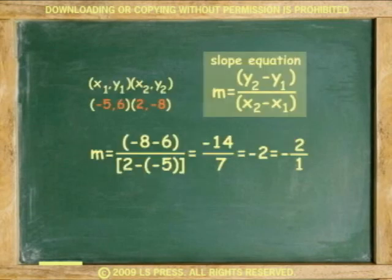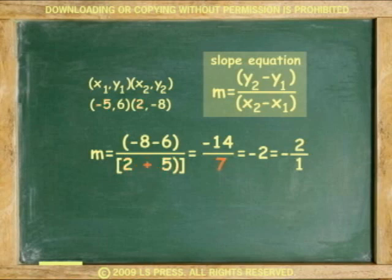Another example. Find the slope of the line passing through points (negative 5, 6) and (2, negative 8). M equals negative 8 minus 6 equals negative 14. 2 minus negative 5 equals 7. Same signs, positive. Negative 14 over 7 equals negative 2. The slope is negative 2.